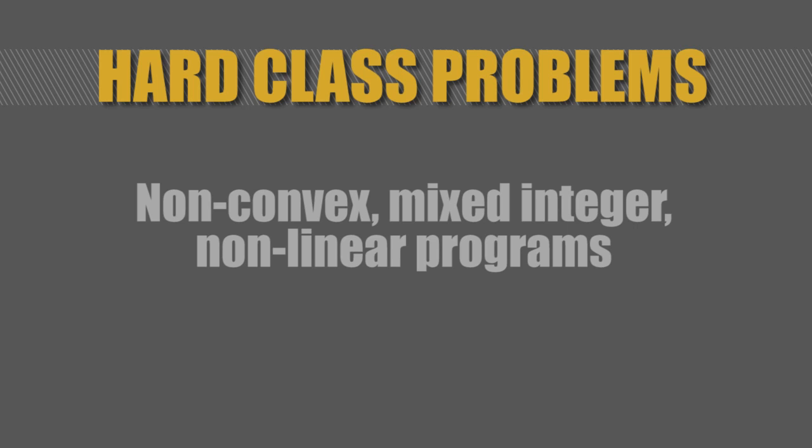These have all sorts of nonlinear functions involved and discreteness in choices. You cannot make 2.5 airplanes, for example. There's discreteness in the number of units you're dealing with, and under all these type of scenarios, you're trying to optimize your decisions.